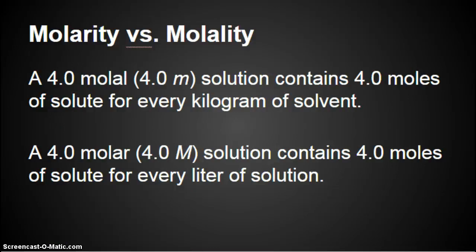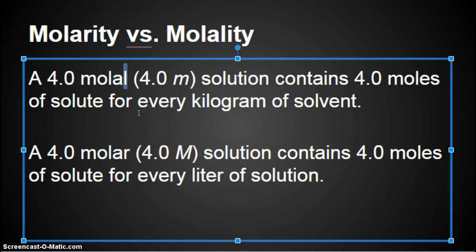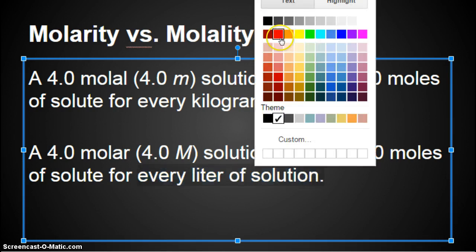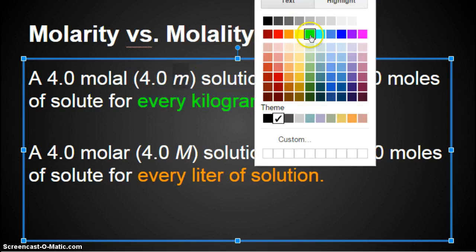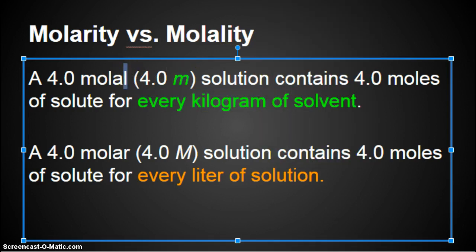So let's look again at molarity versus molality. We have a 4.0 molal solution. So this is molality. Contains 4.0 moles of solute for every kilogram of solvent. A 4.0 molar solution contains 4.0 moles of solute for every liter of solution. So the big difference is what you are dividing by. The rest of it is pretty much the same. Our unit is a little bit different, and of course it's molal instead of molar. But if you notice in my sentence, everything else is the same.